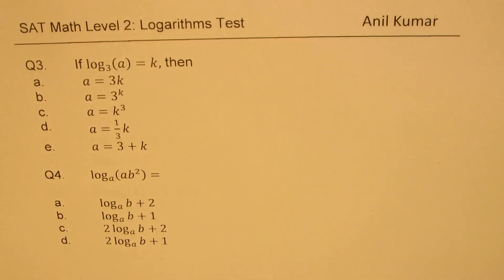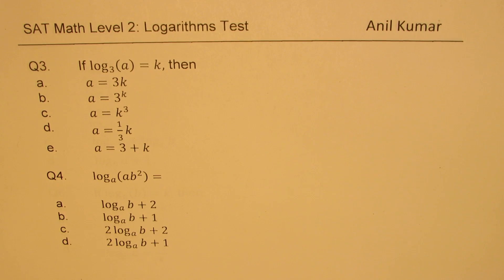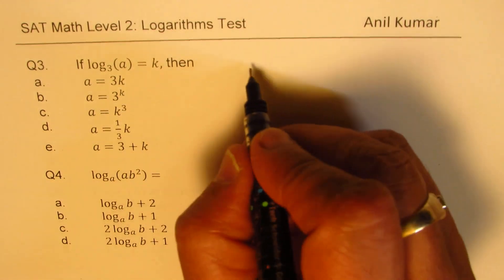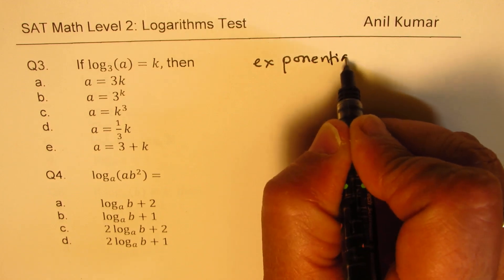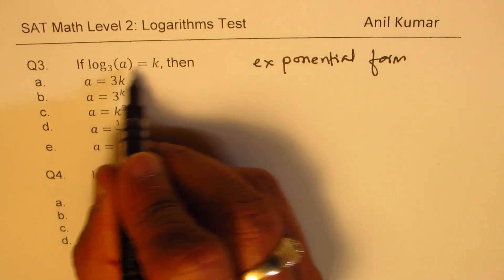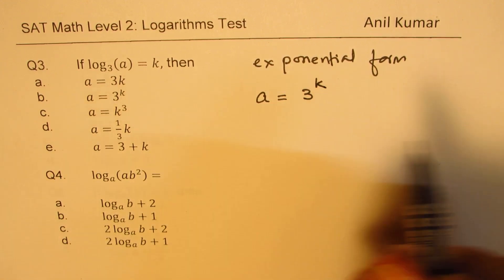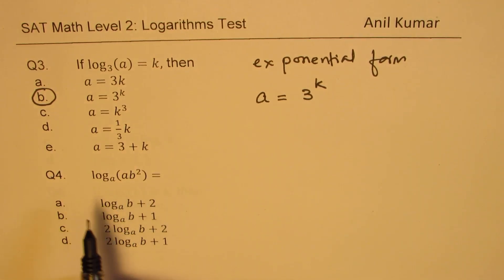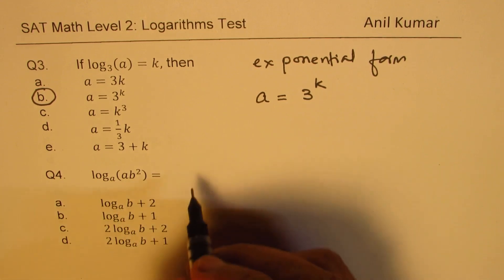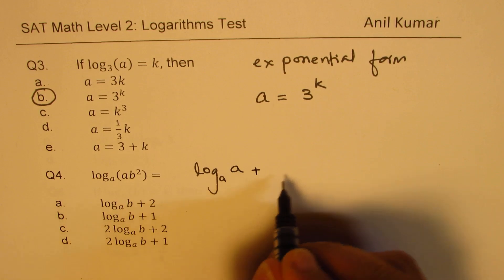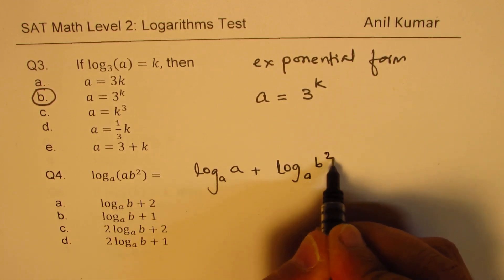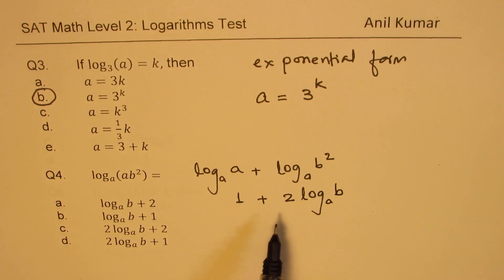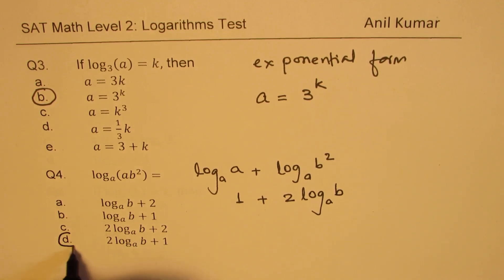Question 3: log base 3 of a equals k — convert to exponential form. We get a = 3^k, so option b is correct. Question 4: log_a(ab²) — expand as log_a(a) + log_a(b²). Since log_a(a) = 1, we get 1 + 2·log_a(b). So option d is the right answer.